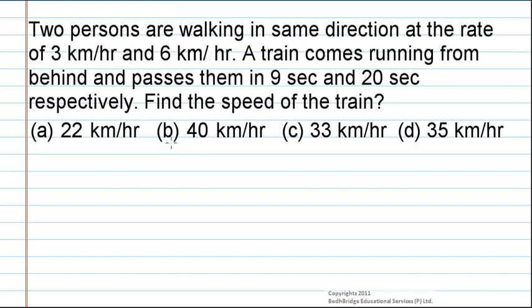Two persons are walking in the same direction at the rate of 3 km per hour and 6 km per hour. A train comes running from behind and passes them in 9 seconds and 20 seconds respectively. Find the speed of the train.